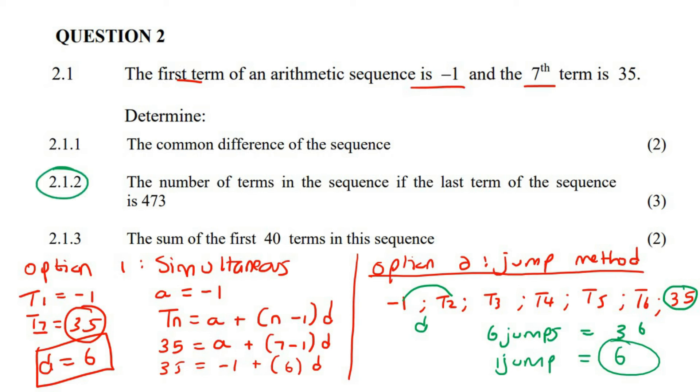Now we're going to move on to this one. It says what is the number of terms in the sequence if the last term is 473? For this one, you write down your formula: Tn equals to a plus n minus 1 times D. We know what A is, and we know what D is. Those are constants. Now, they said that the last term is 473. Some learners are going to put 473 in the wrong place. You've got to ask yourself, what is this 473? That is a number in the term, so that's going to go here. So it's going to be 473, and then A is negative 1. N, we don't know, and then the common difference we worked out in the previous question as 6.